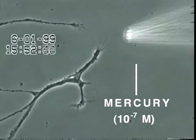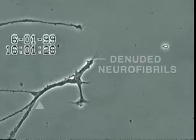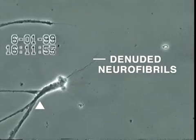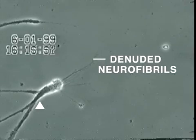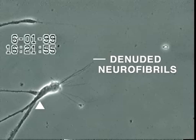Over the next 30 minutes, the neurite membrane underwent rapid degeneration, leaving behind the denuded neurofibrils seen here. In contrast, other heavy metals added at this same concentration, such as aluminum, lead, cadmium and manganese, did not produce this effect.